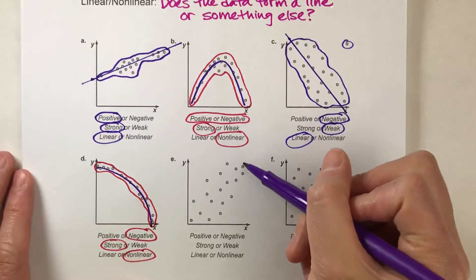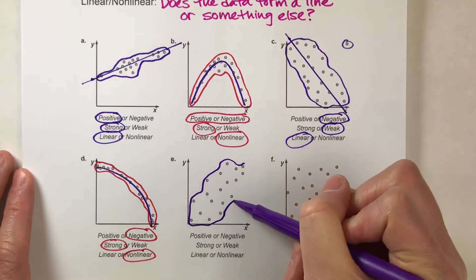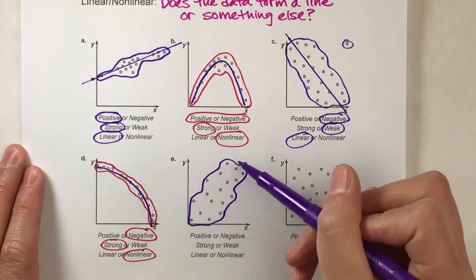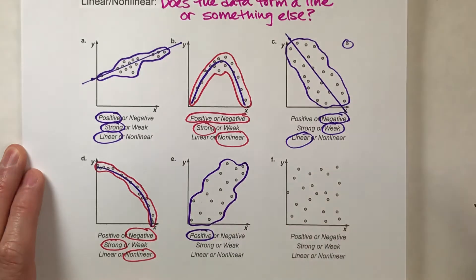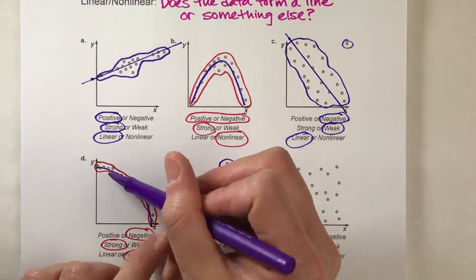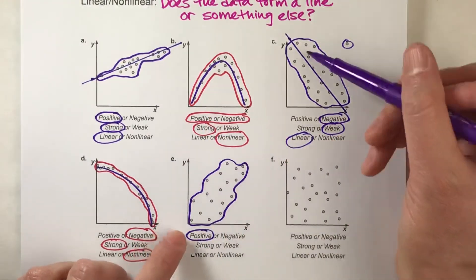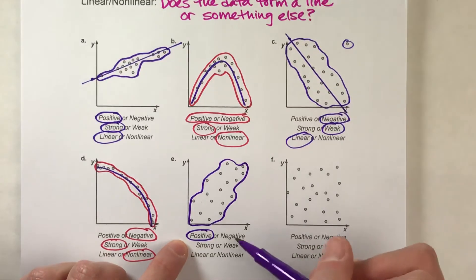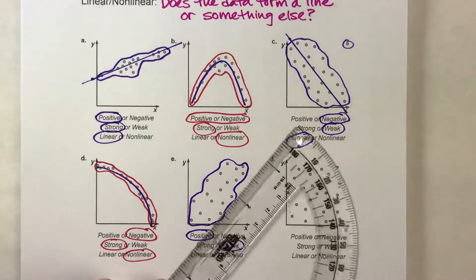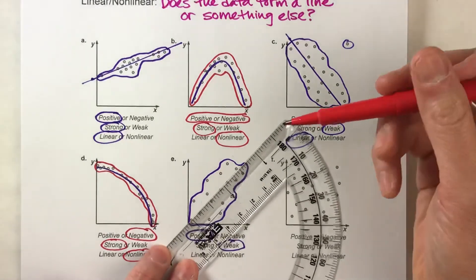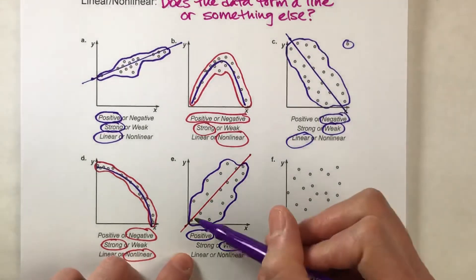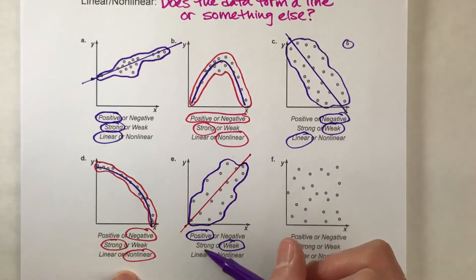On this next example, I'll outline the data again — and notice how outlining it makes it a lot easier to see the pattern. It's kind of going up and to the right, so that's a positive association. It's not a super tight pattern — it's kind of loose and spread out — so I'm going to say this is a weak association. But if I draw a line through here, you can see that even though it's weak, it does follow the pattern of a line. So we will say that is linear.